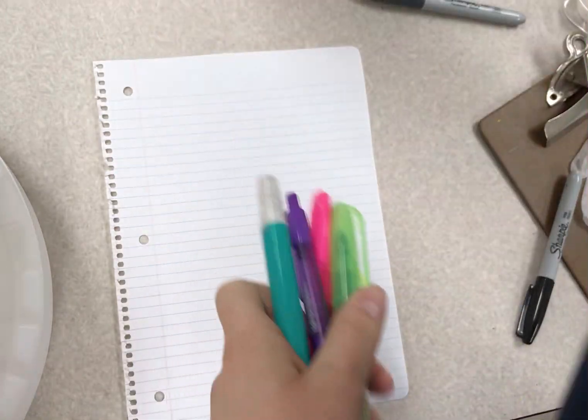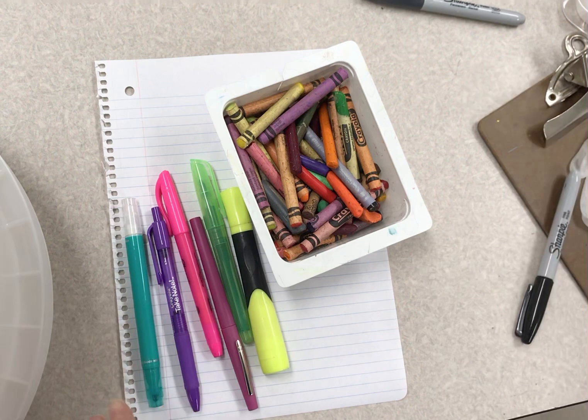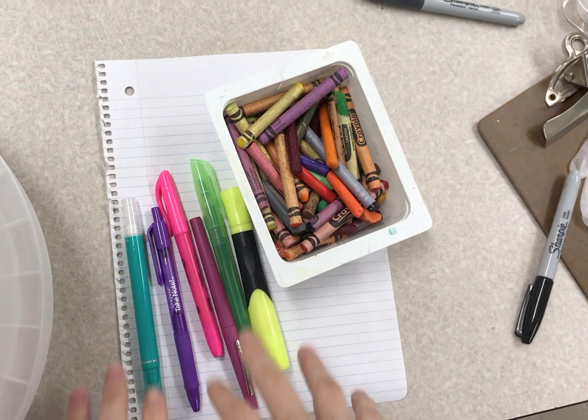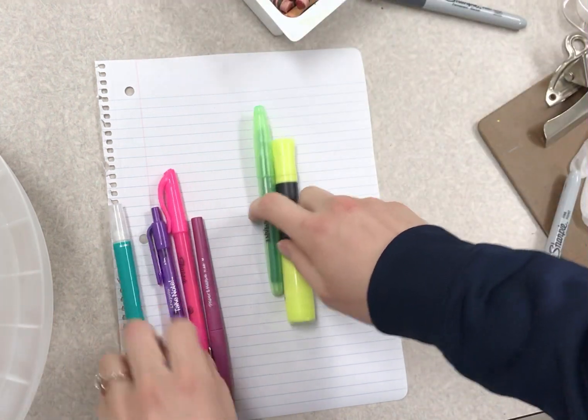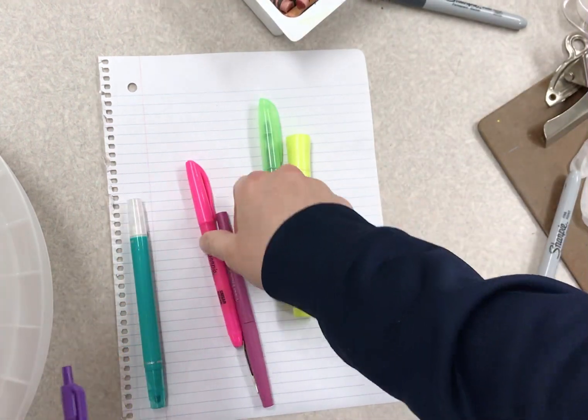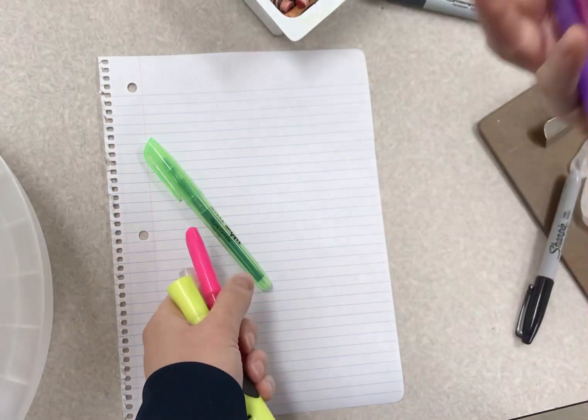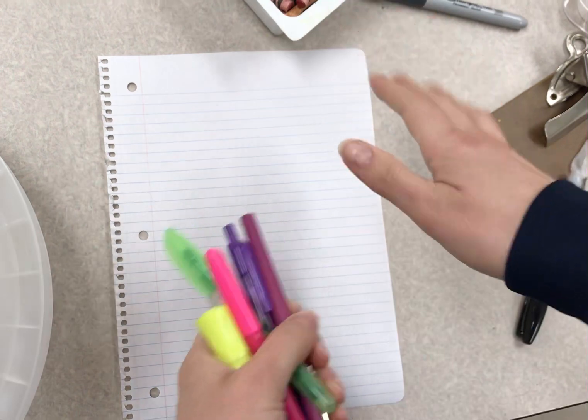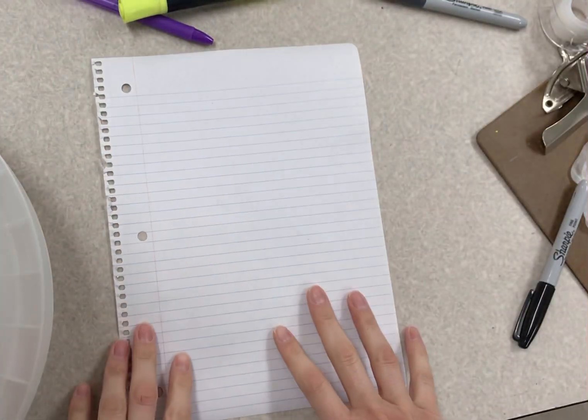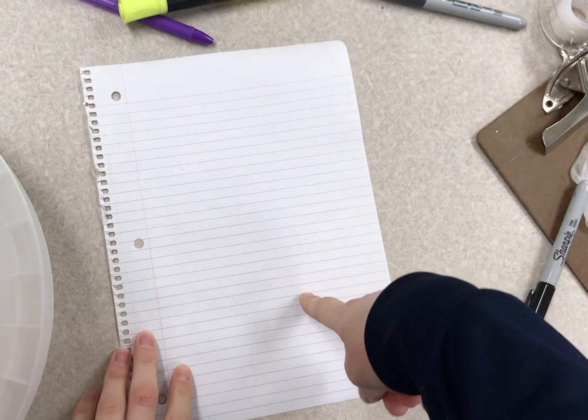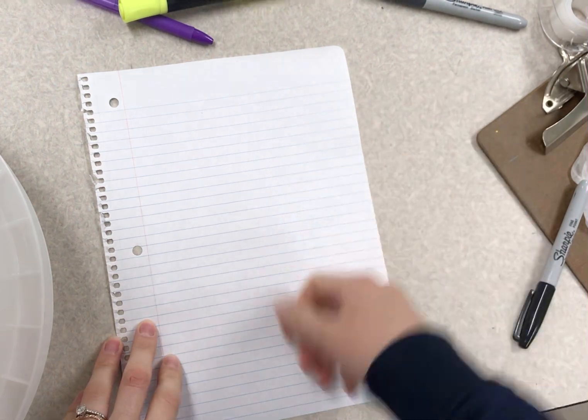Now what you'll need is literally anything that you can color with. I think the more that you have, the better. For example, crayons, highlighters, gel pens, other fancy pens that you have. If you have metallic markers, really anything would be best. And if you have lined paper, that's awesome. If you don't, you can just do strips of color on your sketchbook paper or printer paper.